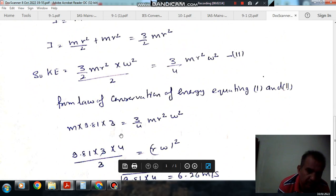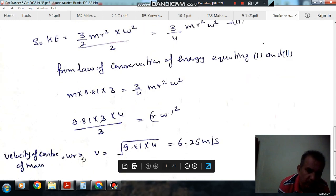This gives 9.81 times 3 times 4 over 3, so v squared equals 4 times 9.81. Since r omega is velocity, the velocity equals 6.26 meters per second.